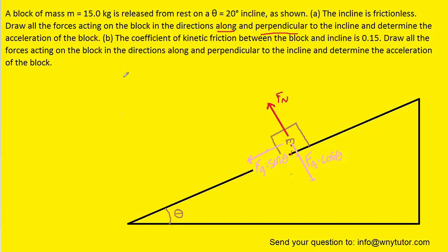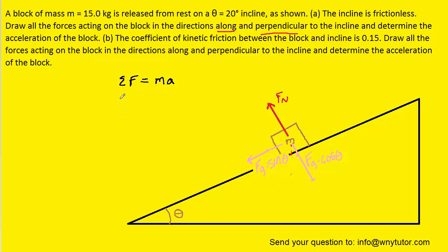Now we have to determine the acceleration using Newton's second law: the sum of the forces equals mass times acceleration. You want to apply Newton's second law in the x and y directions separately. The x direction is parallel to the incline, and there's only one force acting in that direction — FG sin θ. We can call down the incline the positive direction and up the incline the negative direction. Those choices are arbitrary.